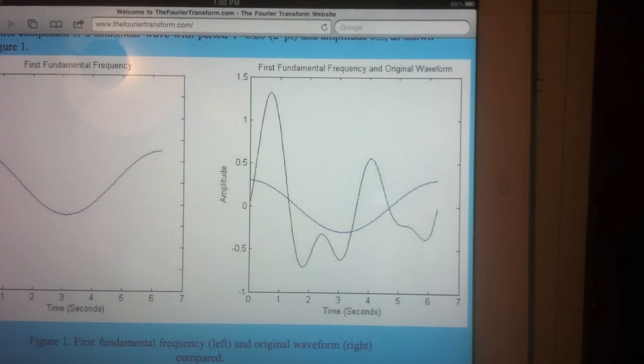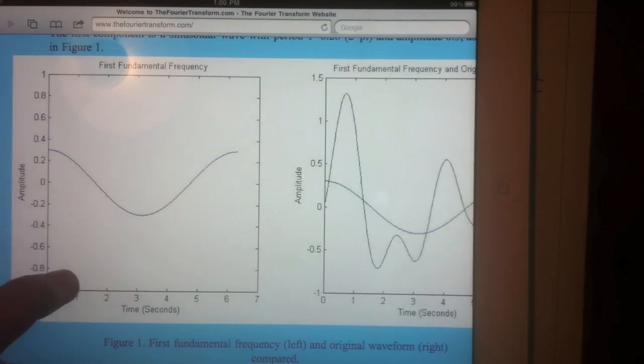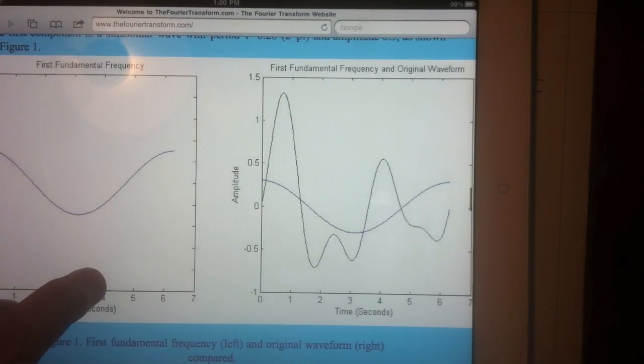So using the Fourier transform, you can find what's called the first fundamental frequency, which is the lowest frequency that this waveform is made up of.